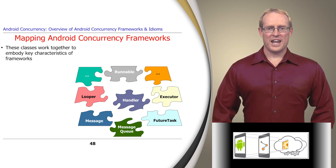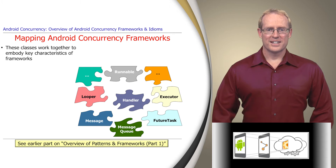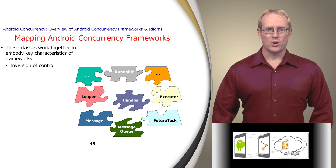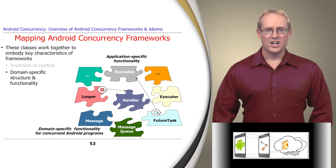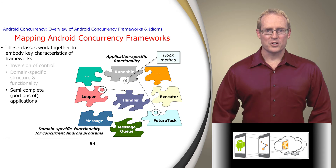The classes and interfaces in Android's concurrency frameworks work together to embody three key defining characteristics of frameworks. In particular, they provide inversion of control, where the framework is responsible for detecting the events that occur, multiplexing these events to the corresponding handlers, and dispatching hook methods on these handlers to perform the intended processing. They also provide integrated structure and functionality targeted at the domain of concurrent programming in Android, as well as semi-complete portions of concurrent applications that can be customized by inheriting from abstract framework classes and interfaces and overriding hook methods to implement application-specific functionality.